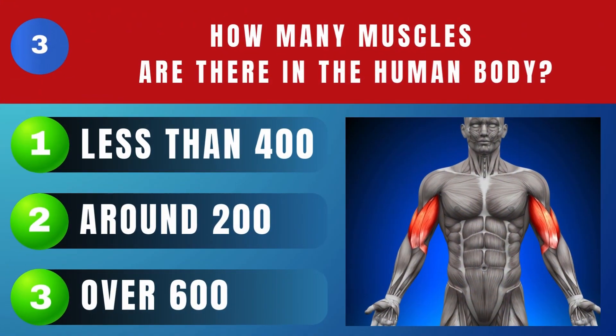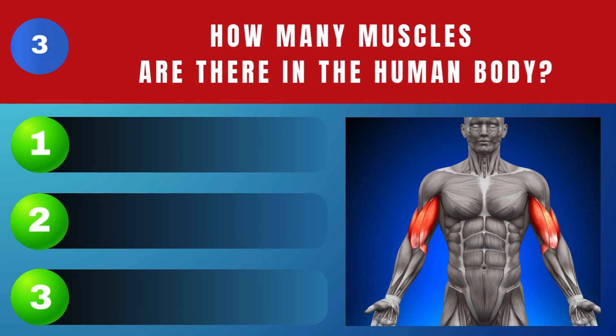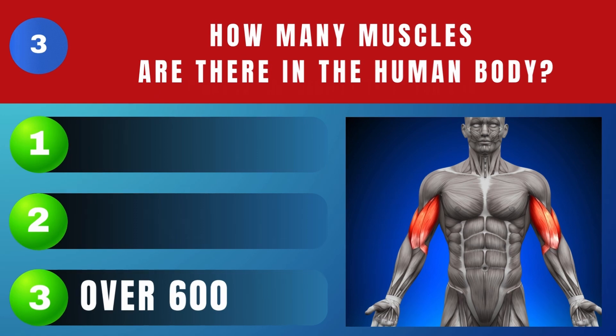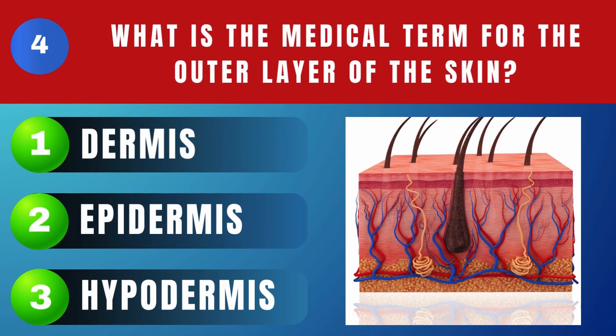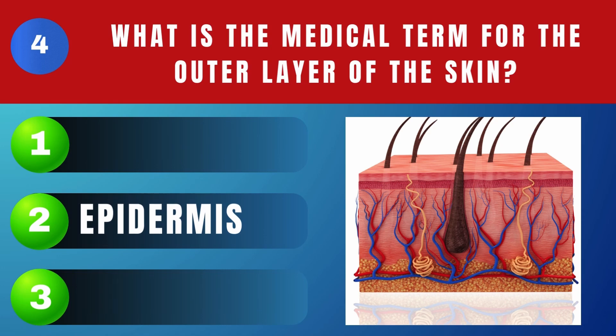How many muscles are there in the human body? Over 600. What is the medical term for the outer layer of the skin? Epidermis.